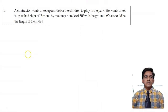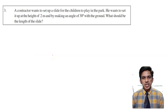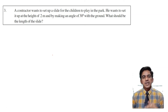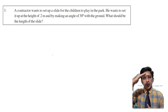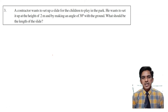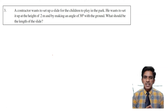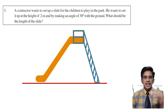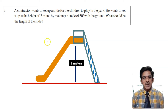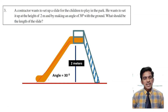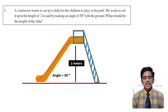Let us move to the next problem. A contractor wants to set up a slide for children to play in the park. The height of the slide is 2 meters and the slide is making an angle of 30 degrees with the ground. We will calculate the length of the slide. Consider this as a slide. The height of the slide is 2 meters, and this slide is making an angle of 30 degrees with the ground.